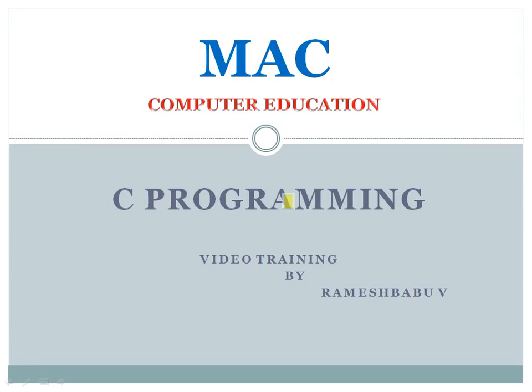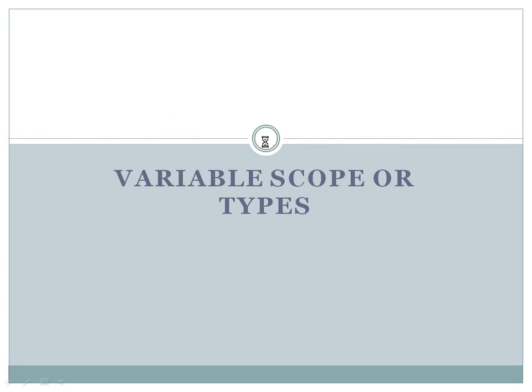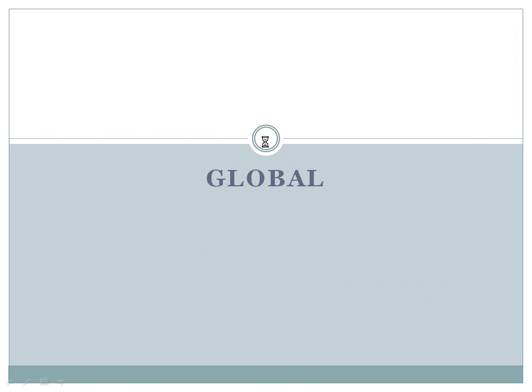Hello friends, in this video we will see variable types or variable scope. We will see what exactly the scope and the types of variables are. The first one would be the global variable. A global variable is when we declare a variable outside all the functions.